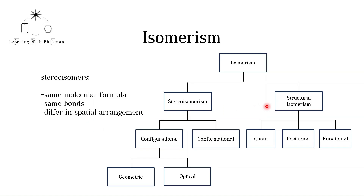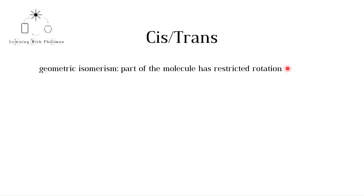In this video we will only focus on geometric isomers, which are a type of configurational isomer. Geometric isomerism occurs when some part of the molecule has restricted rotation.